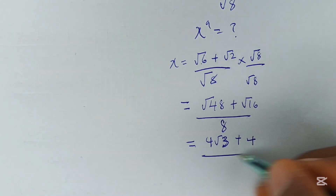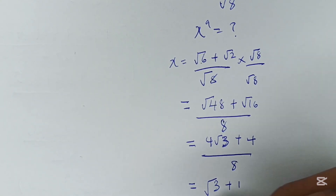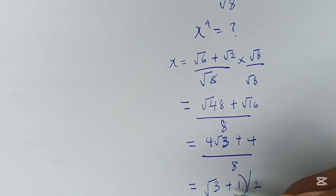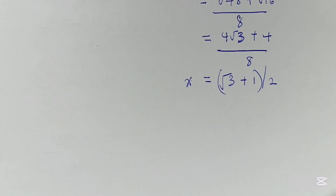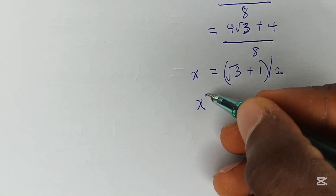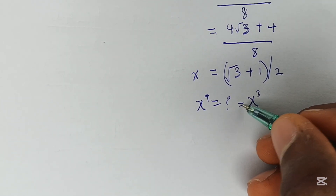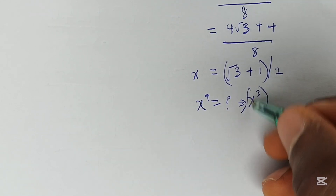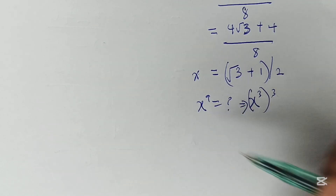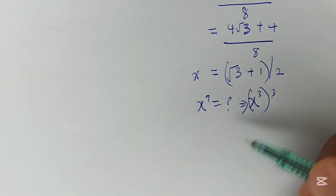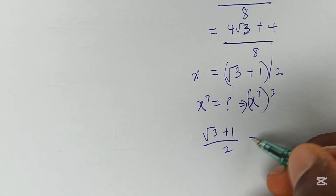This becomes (4√3 + 4)/8, which simplifies to (√3 + 1)/2 — that's what x equals. Now, to find x⁹, we note that x⁹ = (x³)³. So if we can first find x³, we can then cube that result to get x⁹. We have x = (√3 + 1)/2.